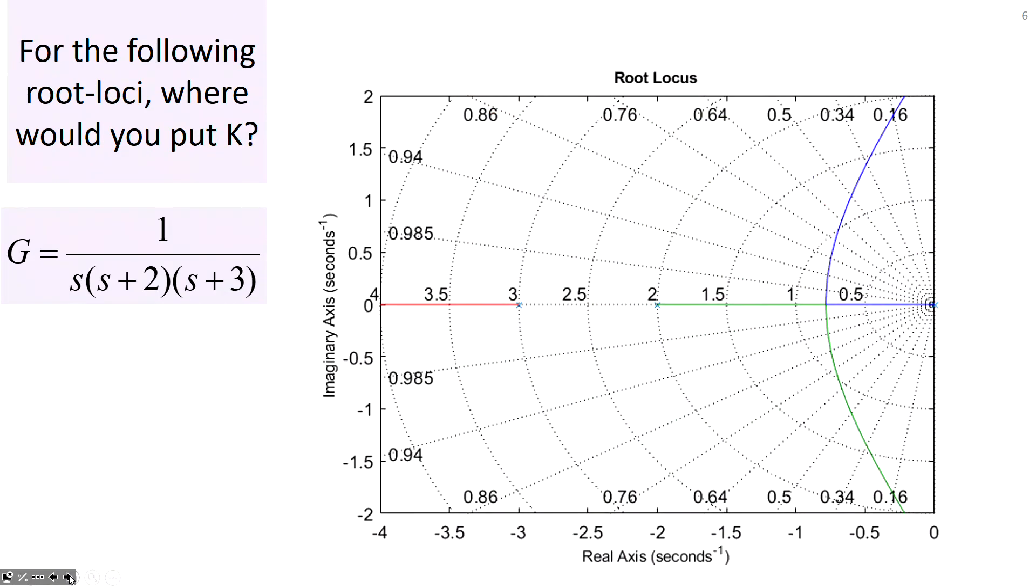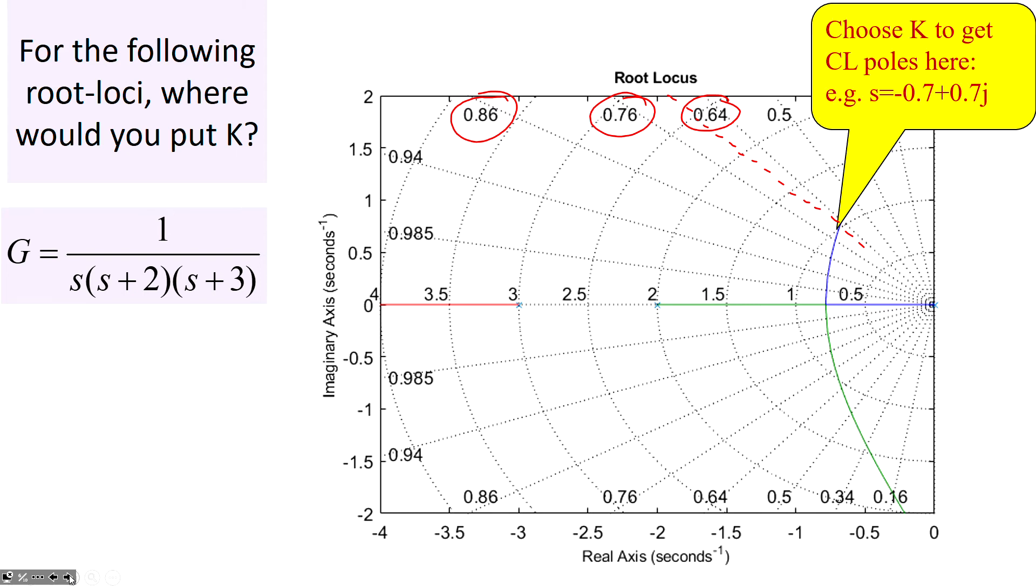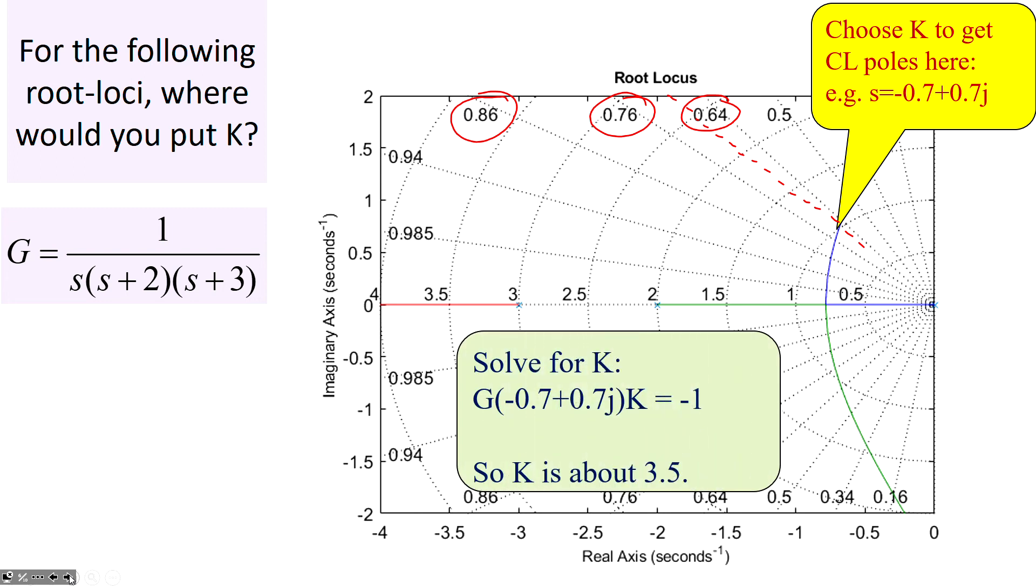So a different example. For the following root loci, where would you put K? So we're going to do the same thing. But you'll notice here I've deliberately overlaid for you the lines which show you damping ratio. So if you want a damping ratio of 0.7, you can see it's going to lie on a line somewhere around here. So it's very easy to find. So I'm going to choose the closed loop pole to put me there on the root loci. And that gives you a pole of about minus 0.7 plus 0.7j. So again, I solve for K simply by solving this equation here, which is relatively straightforward.